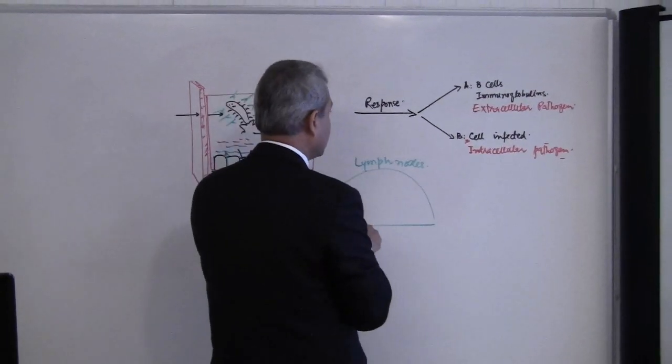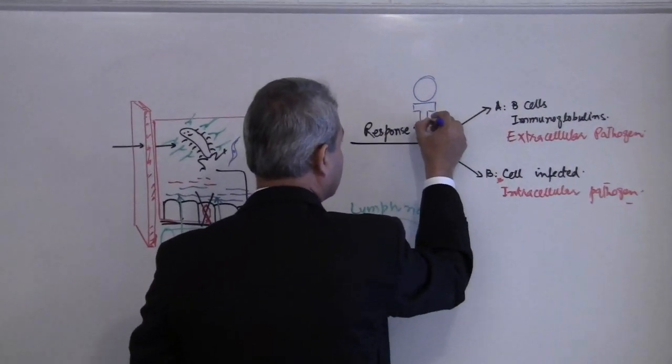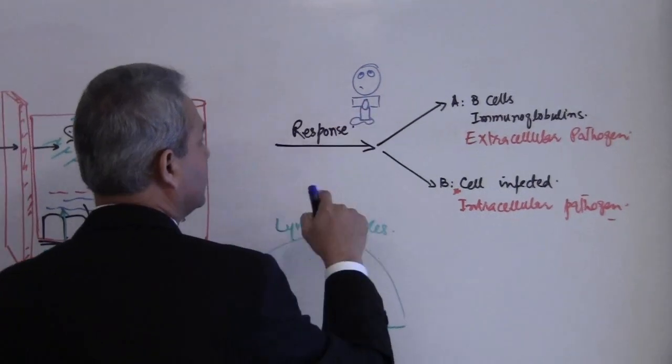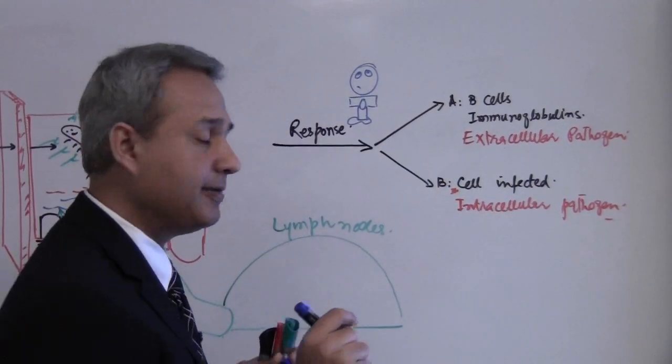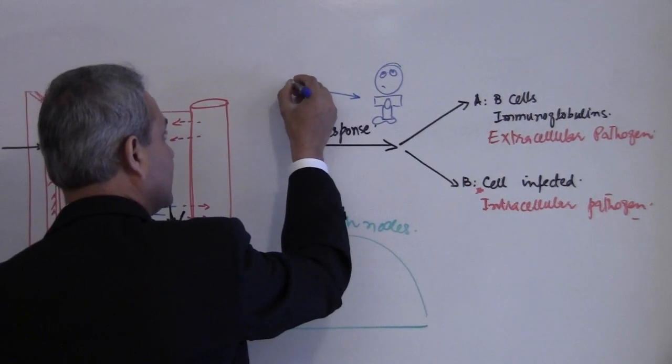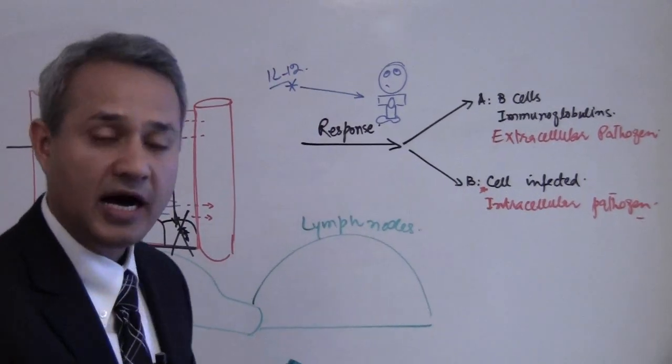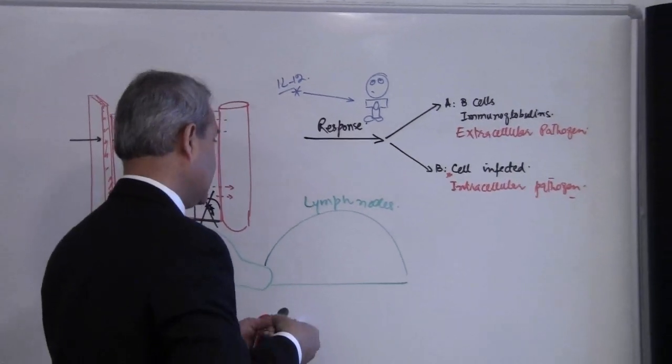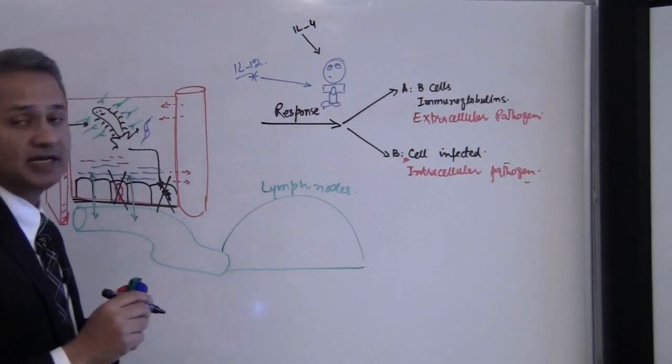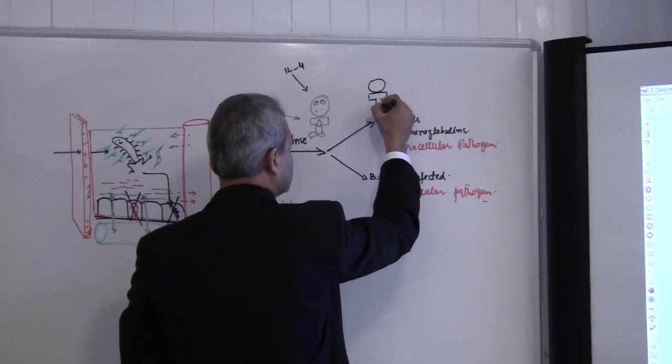Now T cells sit here, so let me make a T cell here. This is a naive T cell, which is a T helper 0 cell. T helper 0 sits here, and depending upon the chemical messages to this T cell - let's say IL-12 interleukin 12, or if this T cell encounters interleukin 4 - depending upon that,